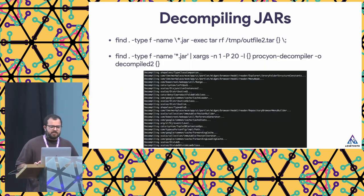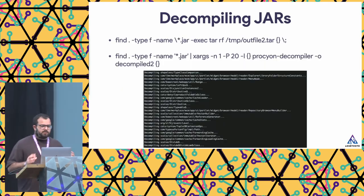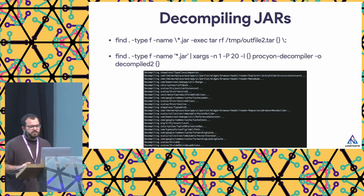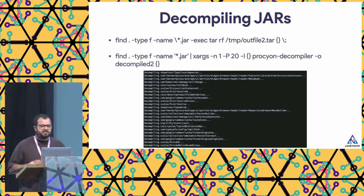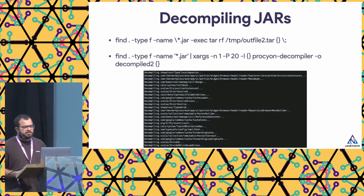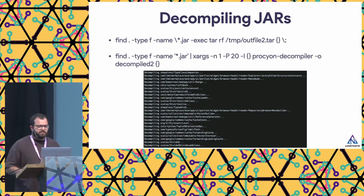Once we started the Docker container, we found all the JAR files, put them in a TAR file, extracted it, and then decompiled all of it. I used the Procyon decompiler to get all of the Java source code.